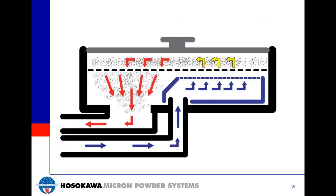The Hosokawa Micro Air Jet Sieve model MAJS-X is a highly accurate and reliable particle size analyzer, used primarily for analyzing dry powders between 4,750 microns to 5 microns by means of the pneumatic sieving principle. As displayed on screen, the pneumatic sieving principle uses a positive airflow introduced upward through a rotating wand located beneath the sieve screen. As the wand rotates, it disperses and distributes the material across the sieve screen, achieving 100% coverage.